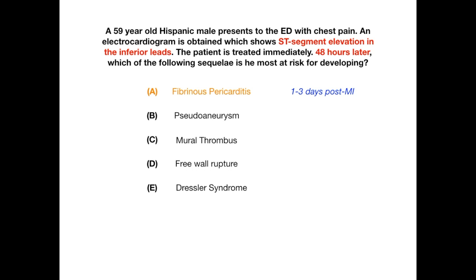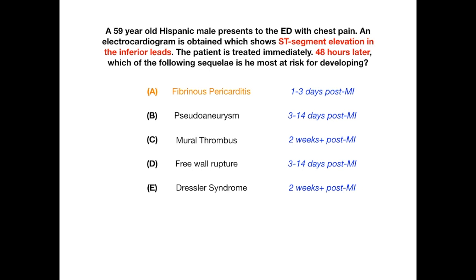Now let's go through choices B through E. B, pseudoaneurysm, and D, free wall rupture — both of those complications occur at three to 14 days after the initial myocardial infarction. For C, mural thrombus, and E, Dressler syndrome, these are both complications that occur at the two or more week mark.